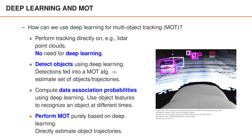Finally, it is of course possible to try to solve the entire multi-object tracking problem using deep learning. In this case we would have a deep neural network, hopefully with a clever architecture, and directly ask it to estimate object trajectories from data.